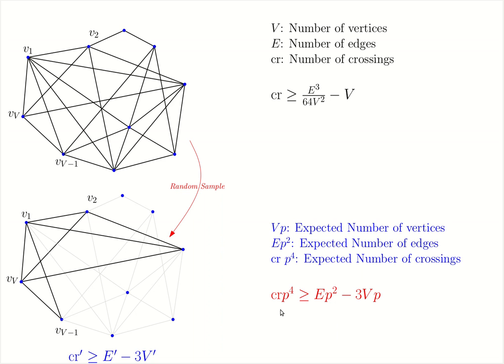In other words, the expected value of the crossings must be at least bigger than the expected number of edges minus three times the expected number of vertices, and thus we obtain this inequality.